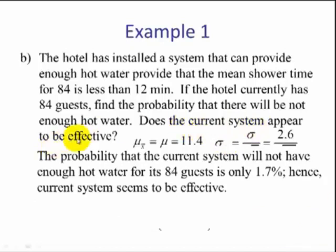Does the system appear to be effective? Yes. The probability that the current system will not have enough hot water for its 84 guests is only 1.7%. Hence, the current system seems to be effective.